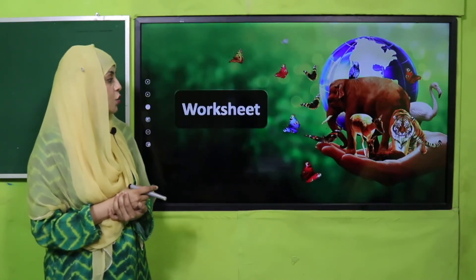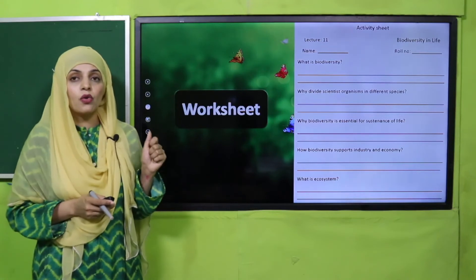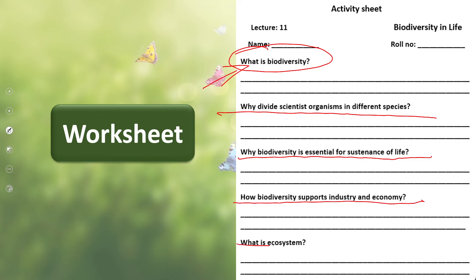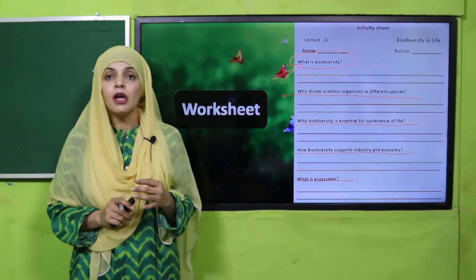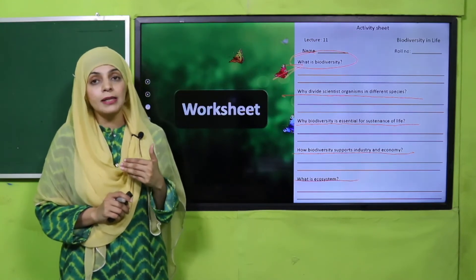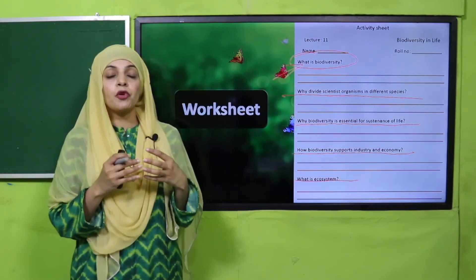Now it's time for practice. You can download this worksheet from the description box below this video, or get it in printed form. Write down your name and roll number, then answer: What is biodiversity? Define it. Why do scientists divide organisms into different species? Why is biodiversity essential for the sustenance of life? How does biodiversity support industry and economy? What is an ecosystem? Scientists divide organisms into different species to study them easily; every organism has a specific function, which is why they are important.